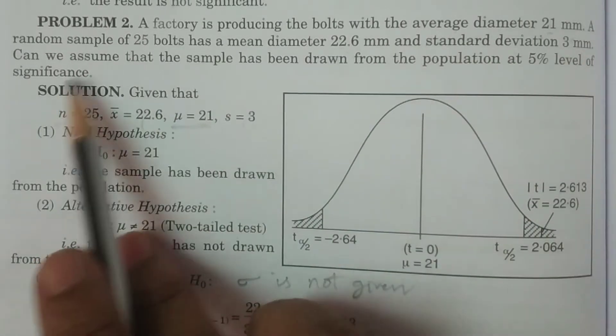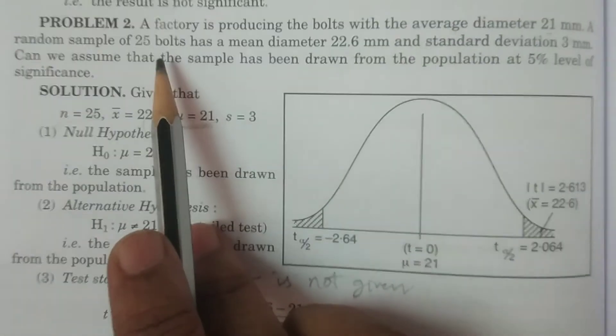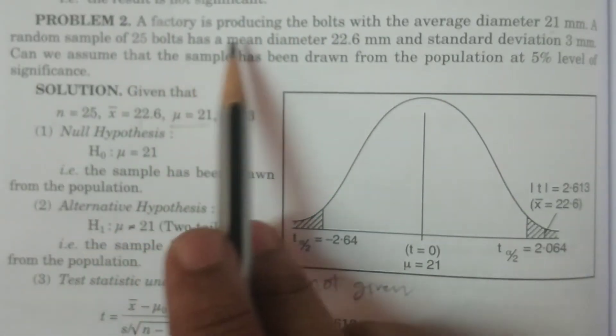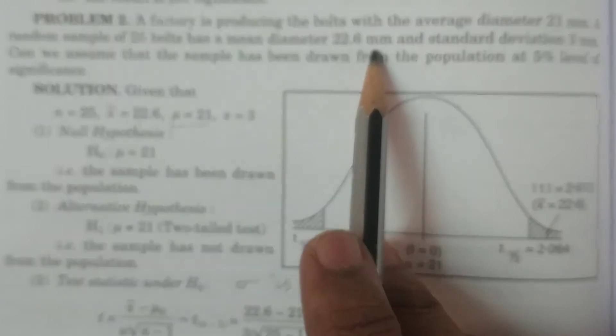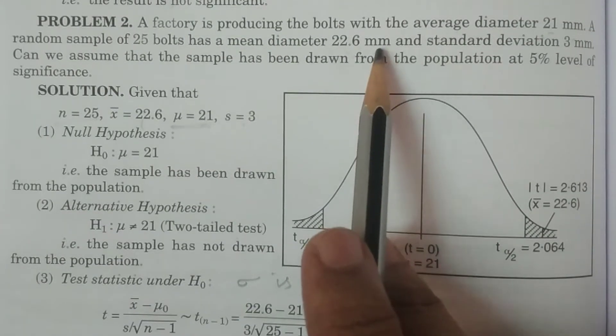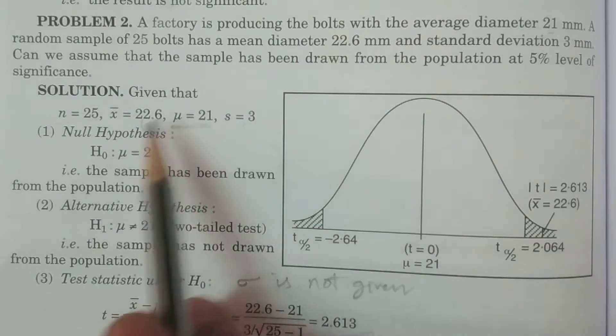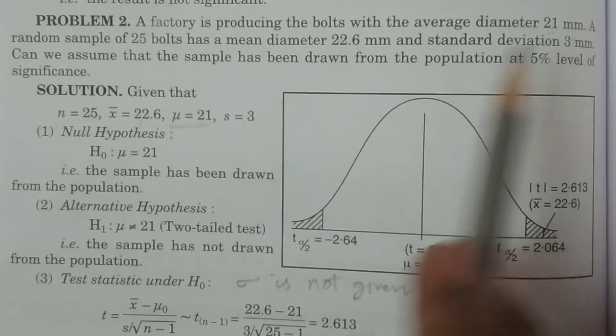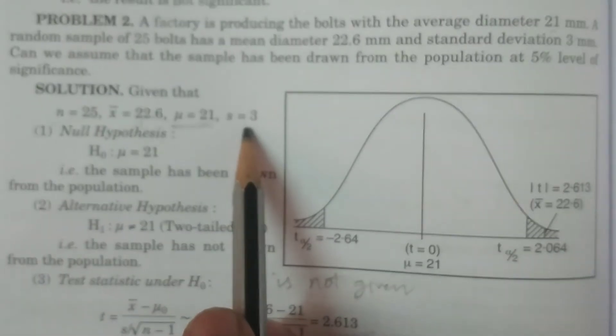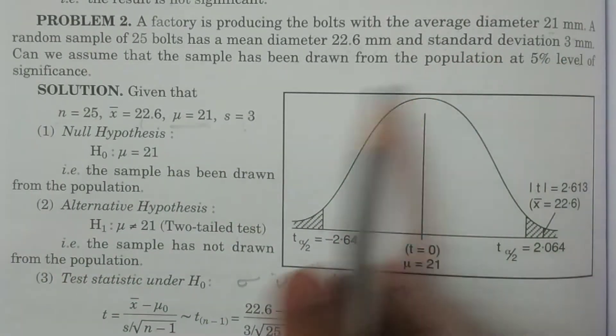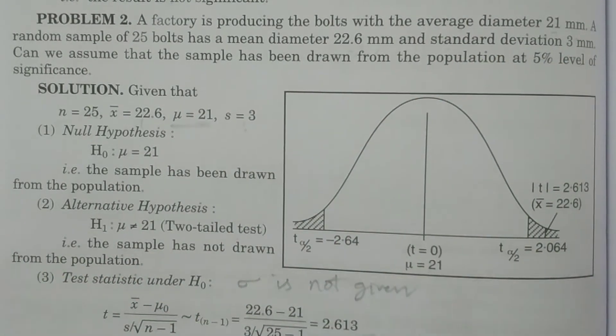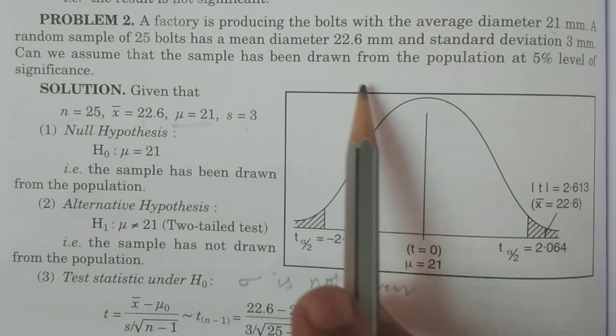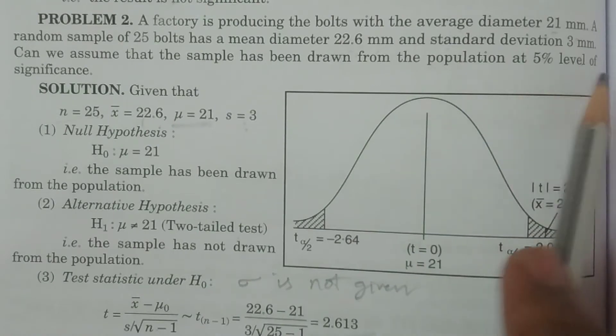A random sample of 25 bolts, N is equal to 25. A random sample of 25 bolts has a mean diameter 22.6 mm. Mean diameter X bar is equal to 22.6 and standard deviation 3 mm. S is equal to 3. Given values. Given data. Can we assume that the sample has been drawn from the population at 5% level of significance?